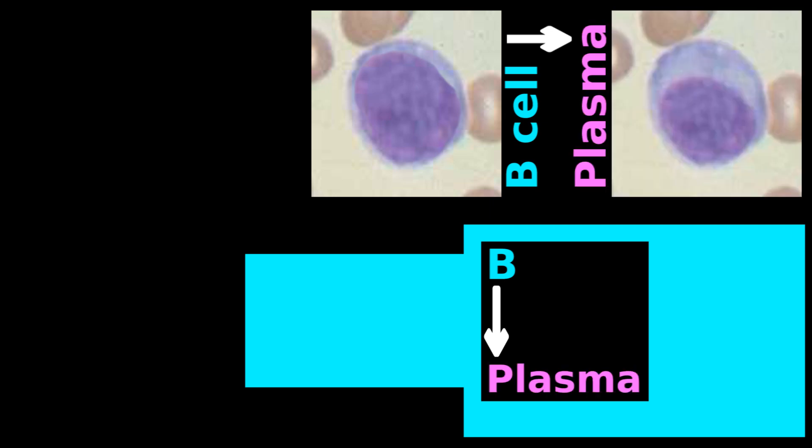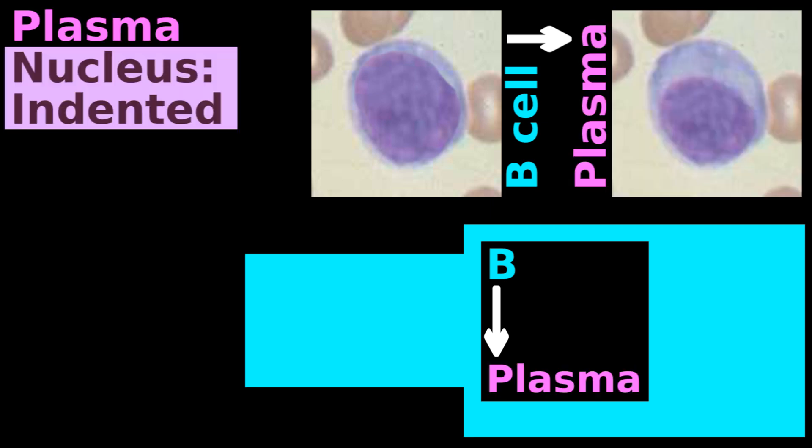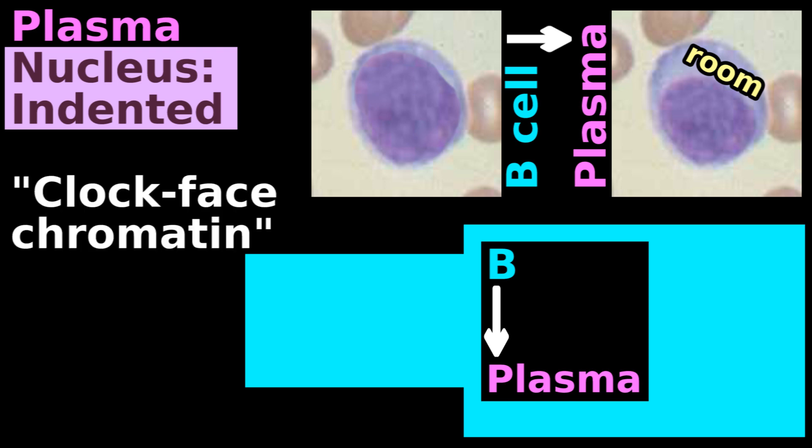If it is a B cell which has grown up to be an antibody-making plasma cell, then the plasma cell's nucleus has an indentation to create room for making antibodies. A plasma cell also has clock-based chromatin, dots around the periphery of the nucleus.